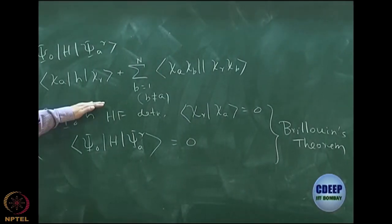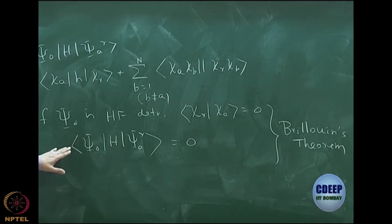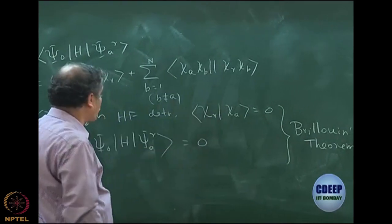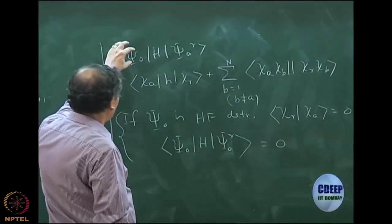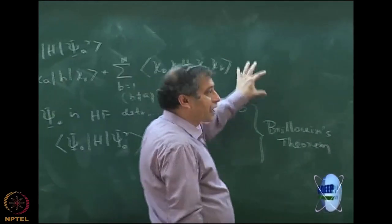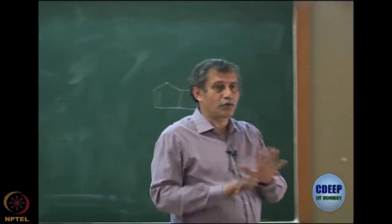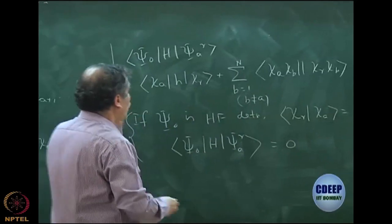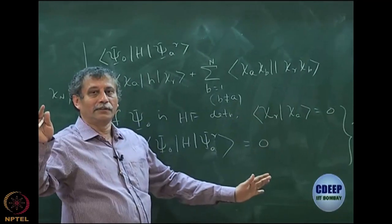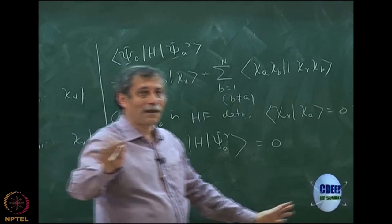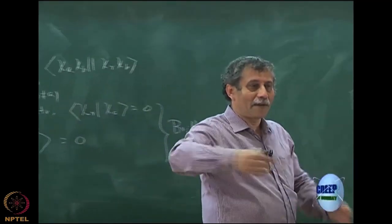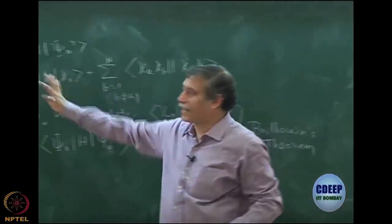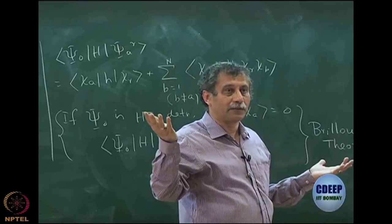However, if ψ₀ is Hartree-Fock and χᵣ is orthogonal to all occupied orbitals, this expression becomes equal to 0. If you are given any arbitrary determinant and asked to calculate such a matrix element, you should always use the general Slater rule — do not write 0. Brillouin's theorem only applies if one of them is Hartree-Fock; this general rule applies for any Slater determinant.